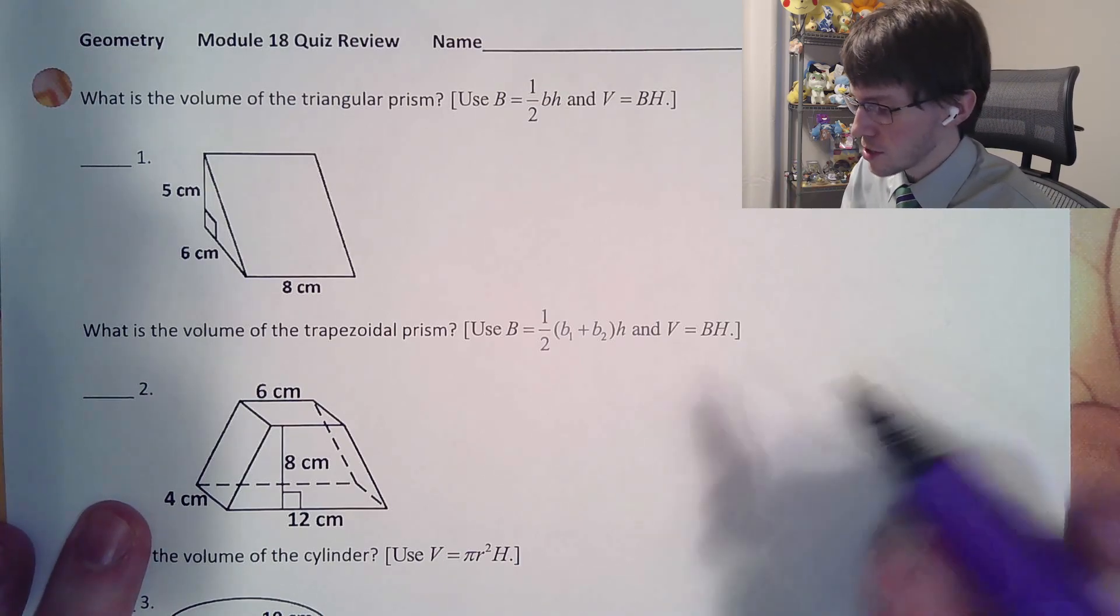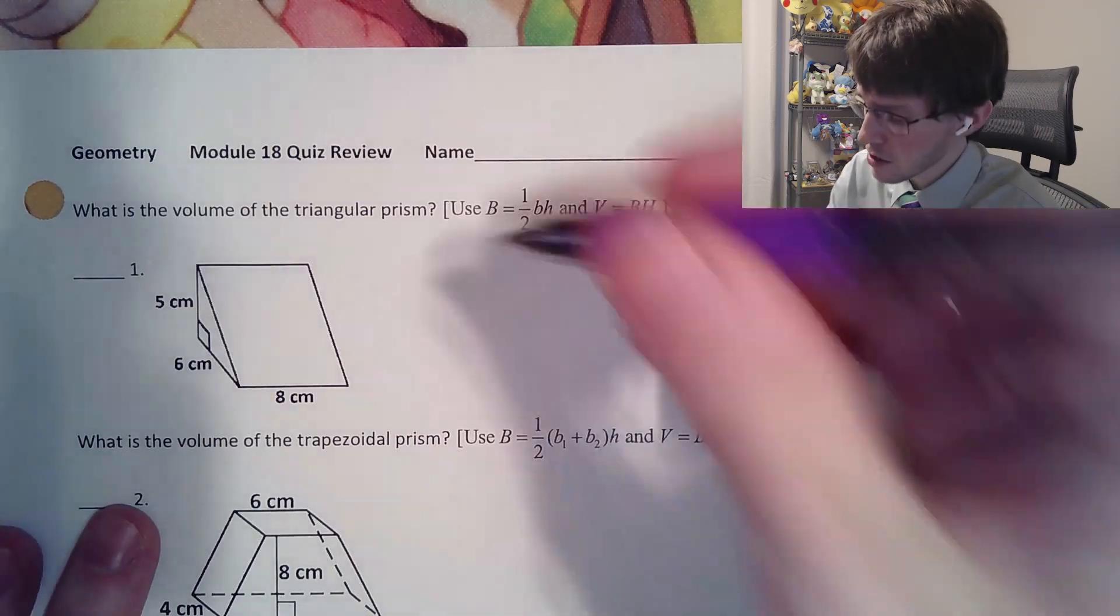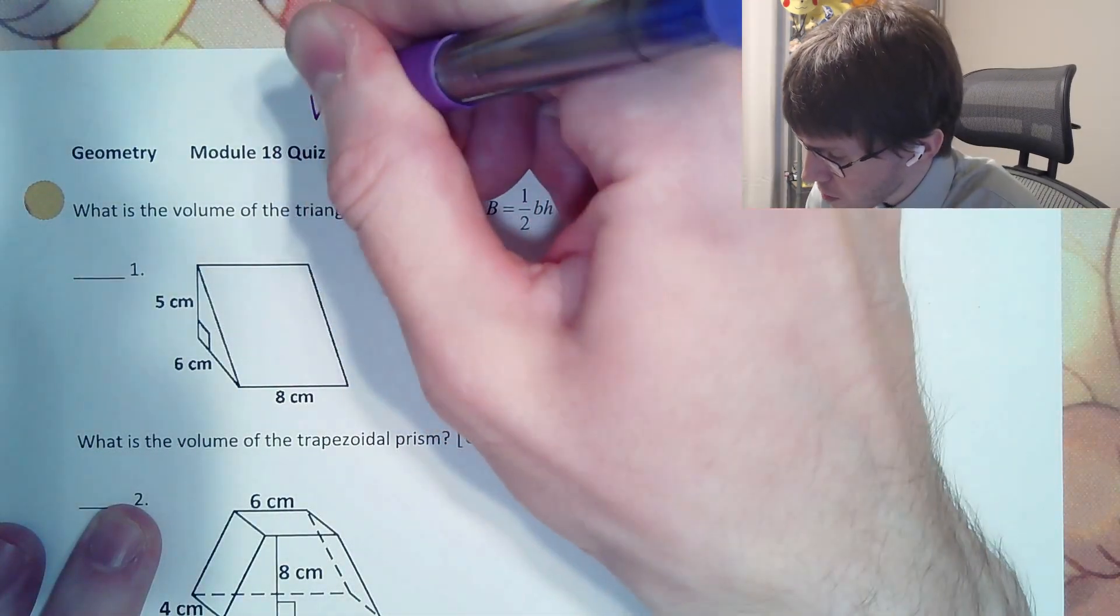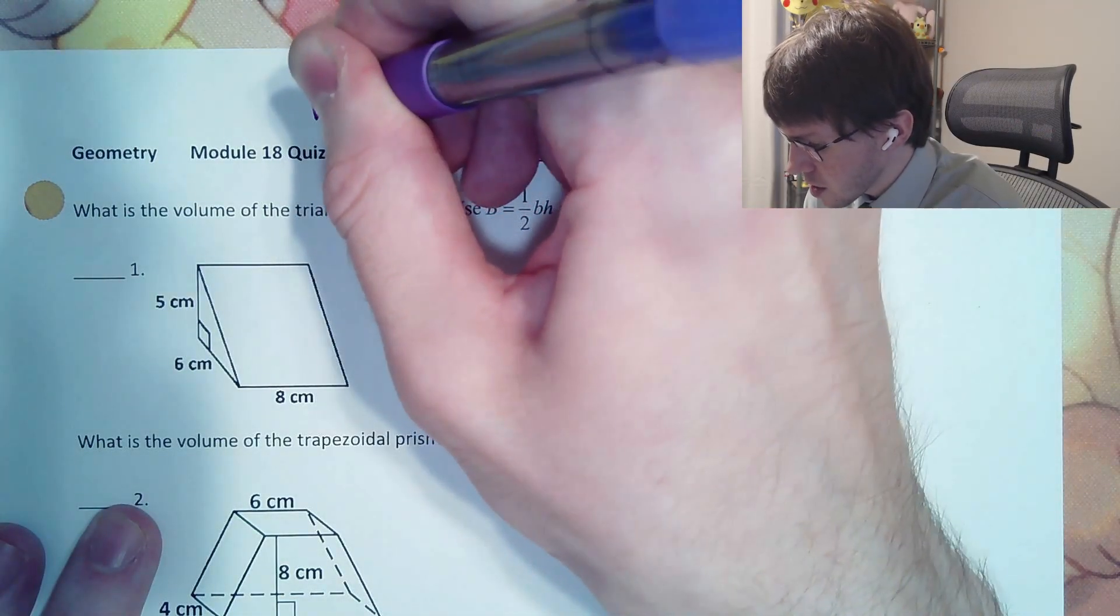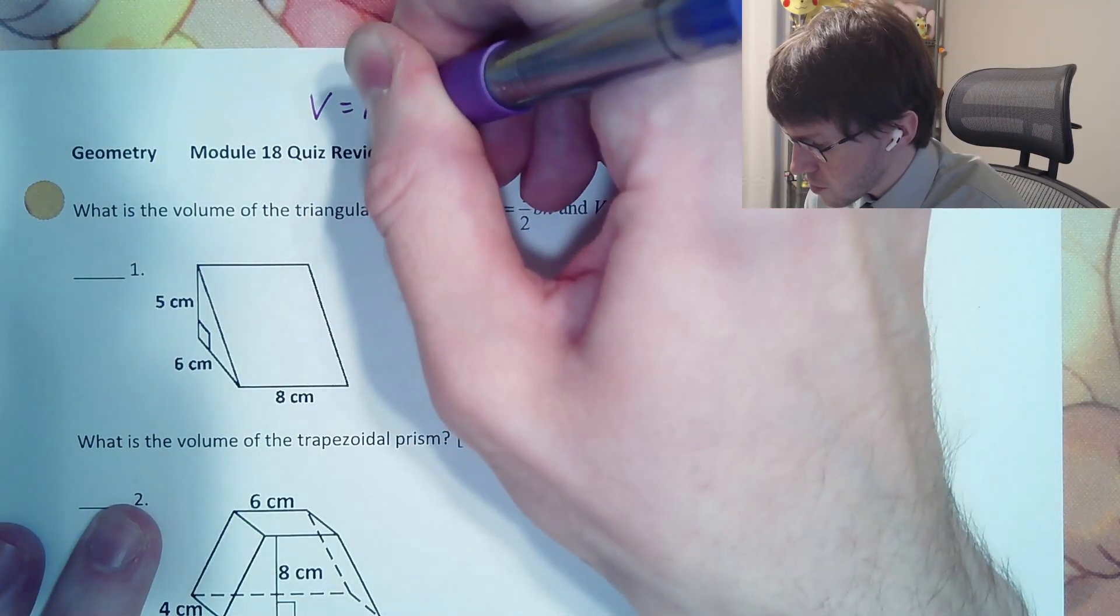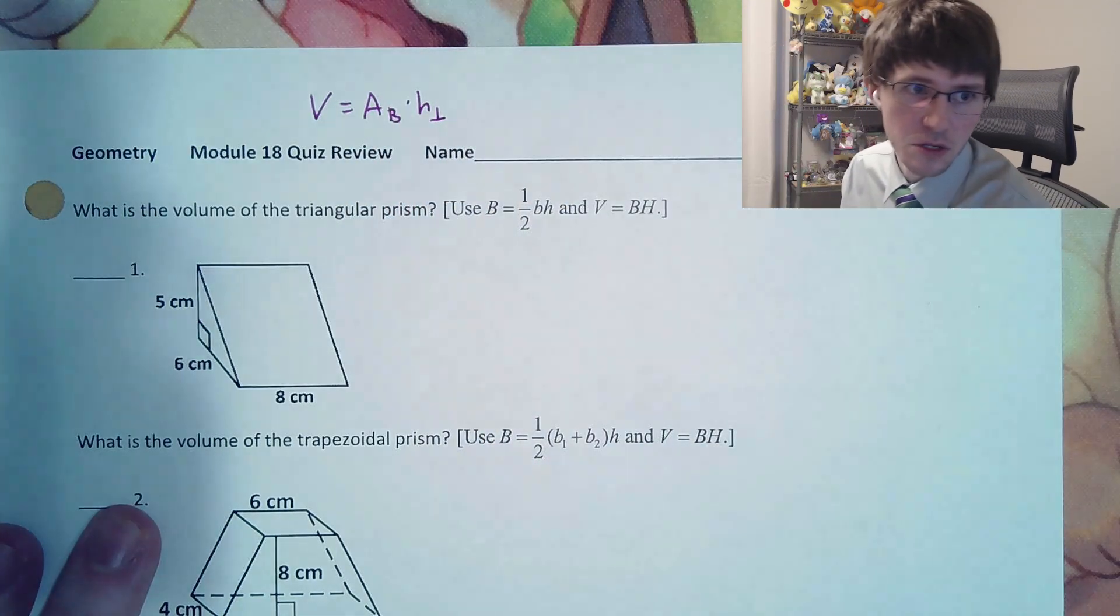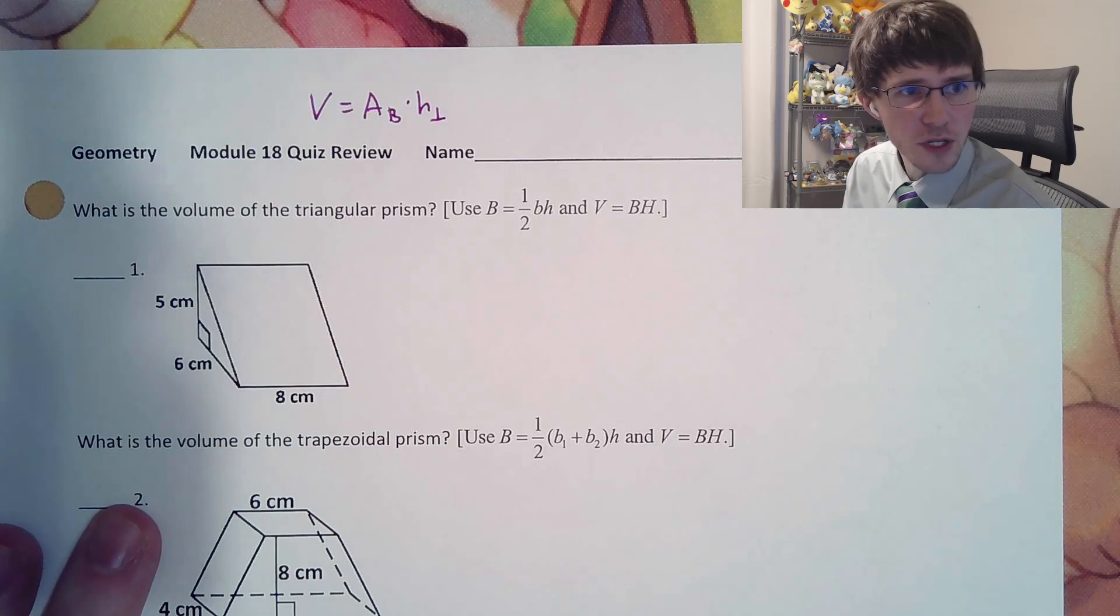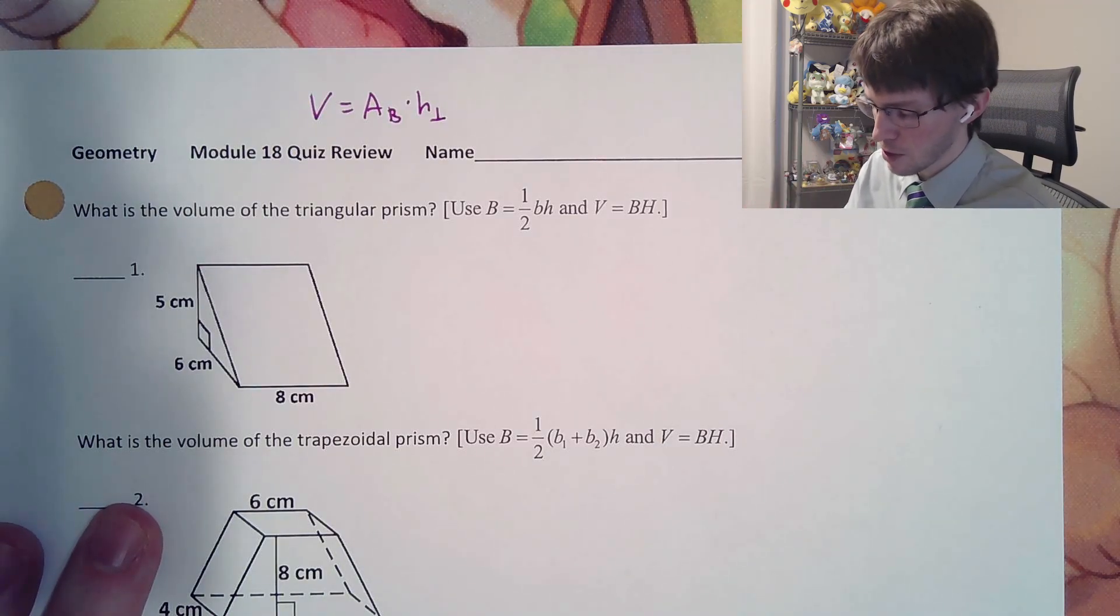Key idea for all of these ones, there's going to be formulas throughout this entire thing. However, the formula that I taught in class, the volume for all prisms and cylinders is going to be your area of your base multiplied by the height that is perpendicular to the base. So on pretty much all these questions, we're going to first figure out what the area of the base is and then multiply by that height perpendicular.